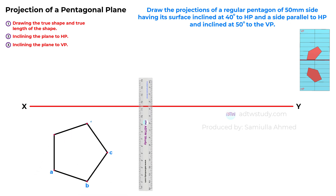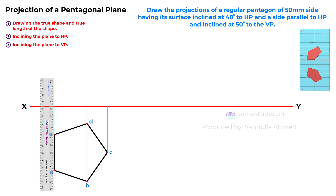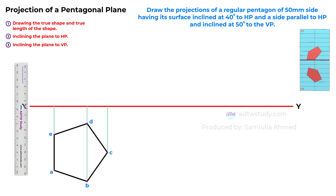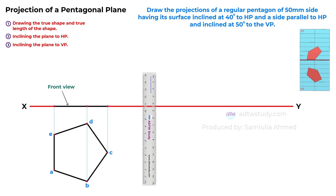Label the corners of the pentagon accordingly. Next, we need to obtain the front view of the pentagon. To do this, project lines from each corner of the pentagon as illustrated. Draw a horizontal line on the reference line. The front view of the pentagon is on this line due to no mention of the plane being above the HP at any distance. Since one side is parallel to the HP, it indicates that the side is resting on the HP. This gives us the front view of the pentagon. Proceed to label the points as A dash, B dash, C dash, D dash, and E dash.